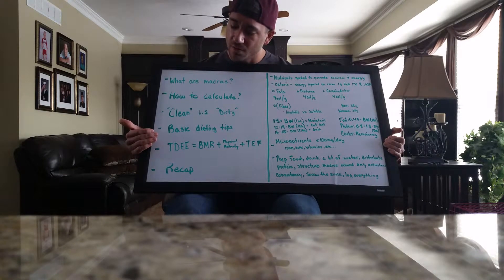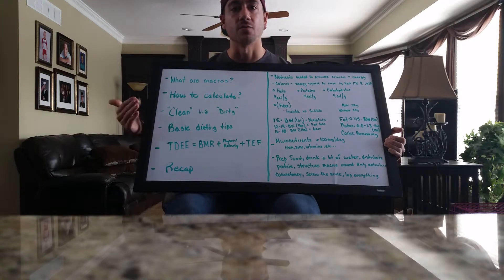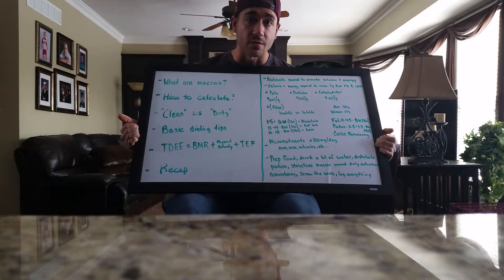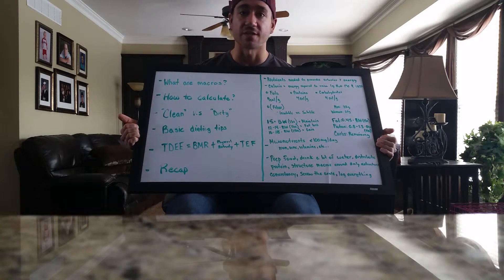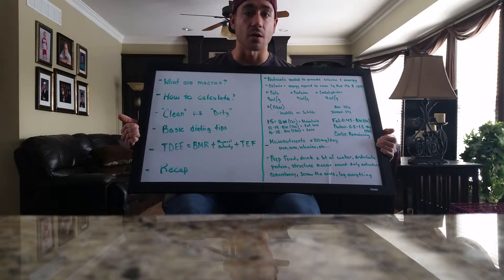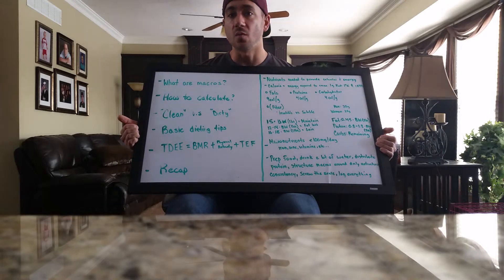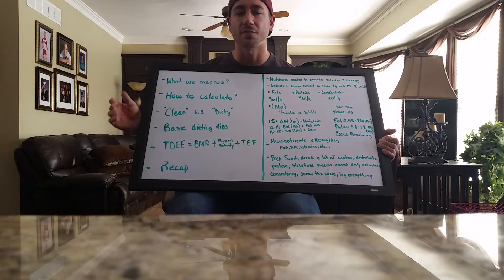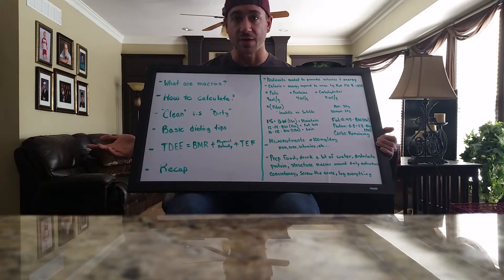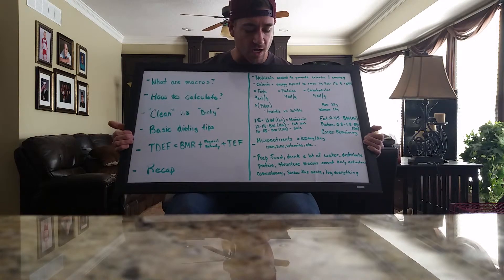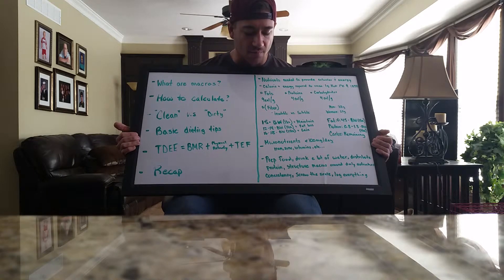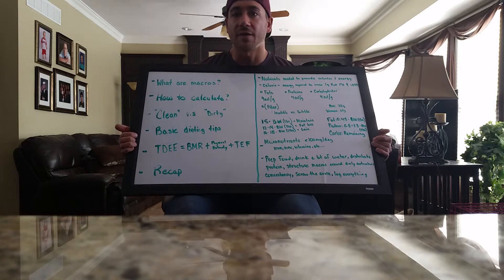Once we have that TDEE value, we can go from there to reach our goals. We're keeping things basic today and not getting into the detailed equations, but if you want a rough baseline of where to start or work from, I'd suggest two easy methods. If you're trying to maintain your body weight, take your body weight in pounds and multiply it by 15 — it's going to give you a nice rough estimate of where to start.